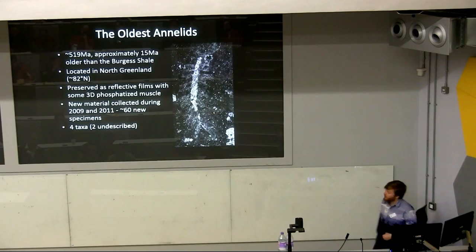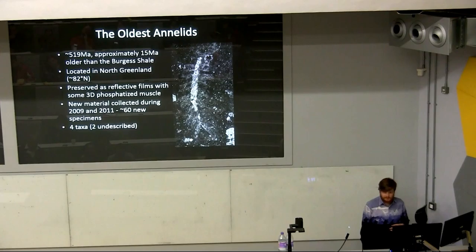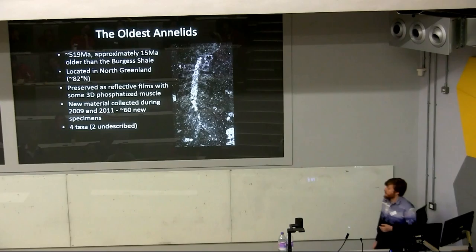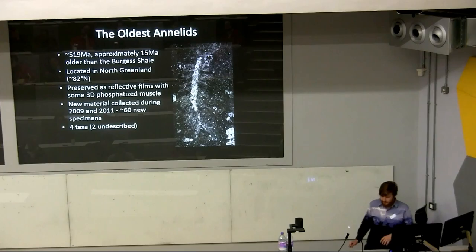Some of the material I've been working on represents the oldest annelid body fossils — annelids from Sirius Passet, a Burgess Shale-type locality from North Greenland approximately 519 million years old, roughly 15 million years older than the Burgess Shale. These animals are preserved as reflective films, but we also get three-dimensional preservation of muscle tissue. I have roughly 60 new specimens in four taxa.